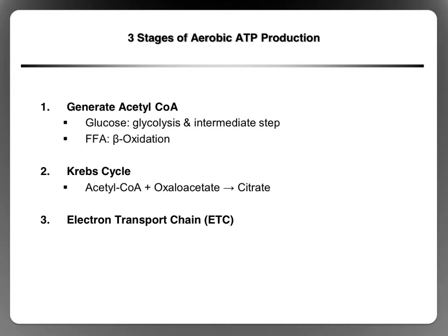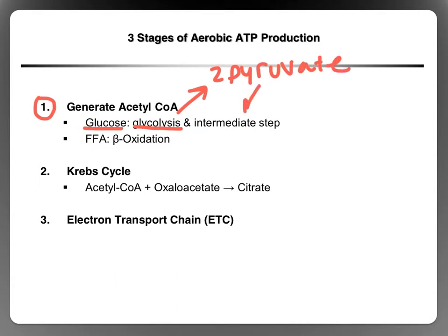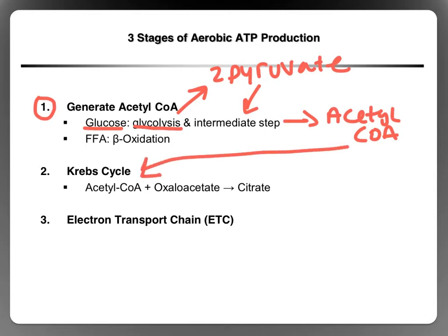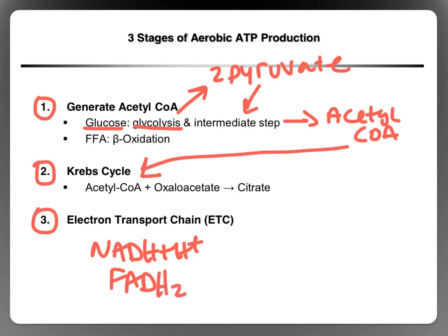There are three stages of aerobic ATP production. The first stage is to generate acetyl-CoA. Starting with glucose, we go through glycolysis, ending up with 2 pyruvates. The pyruvates go into the intermediate step, and out of the intermediate step we get acetyl-CoA. Once you have acetyl-CoA, it can go into the Krebs cycle, which is the second stage. The third stage is that all the NADH+H+ and FADH2s go on to the electron transport chain.